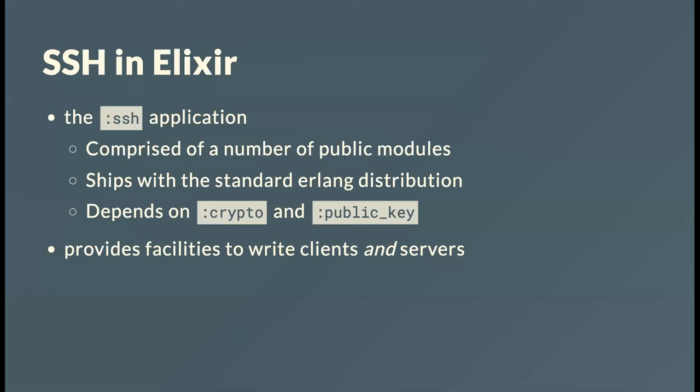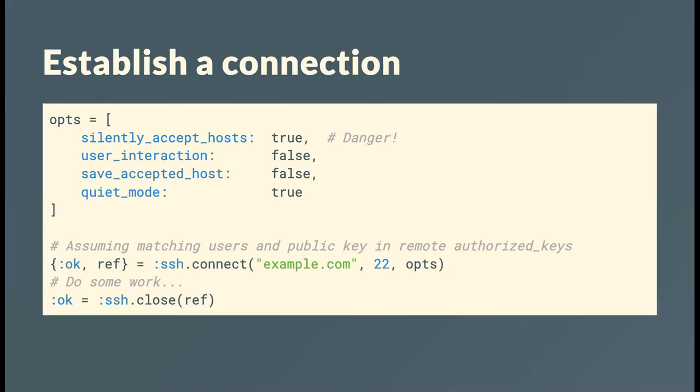The SSH application in Erlang is made up of a multitude of modules — about eight or nine public modules with a supported API. It builds on the crypto and public key applications that also ship with Erlang. The libraries give you facilities to write both SSH clients and SSH servers. When connecting in automation, you don't want interactive prompts asking about fingerprints or writing to your hosts file, so you turn all that off.